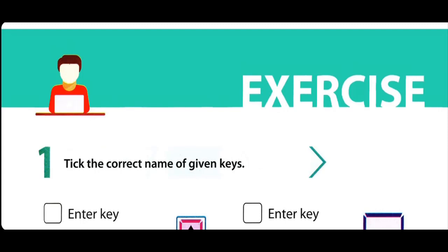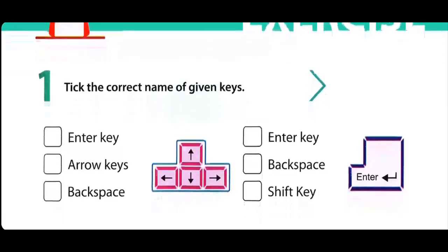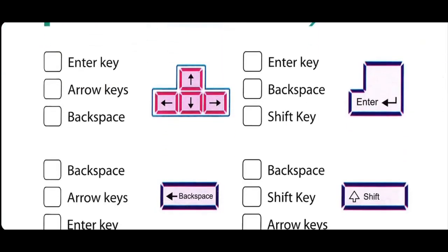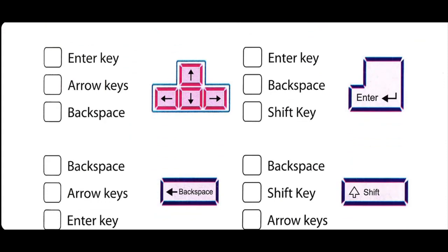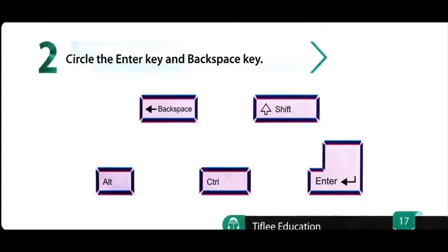Pyare bachyon, yeh aapki exercise hai. Exercise 1: Tick the correct name of given keys. Di gayi keys ke sahi naam par aapne nishaan lagaana hai. Aapko four keys di gayi hain, aapne inke sahi naam ke saamne box mein tick karna hai. Exercise 2: Circle the Enter key and Backspace key. Aapko yahan five keys di gayi hain, aapne Backspace key aur Enter key par circle banaana hai.